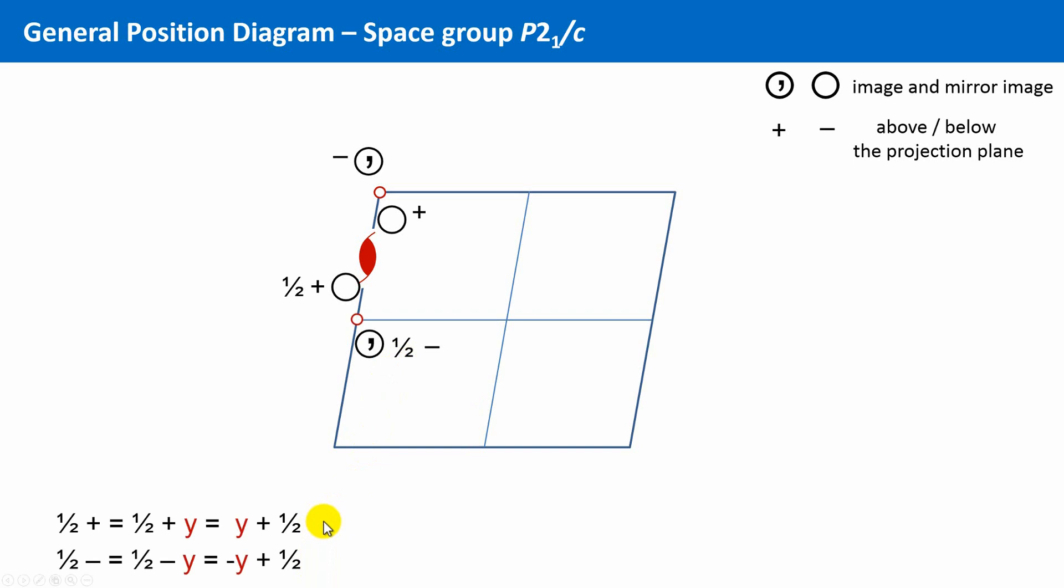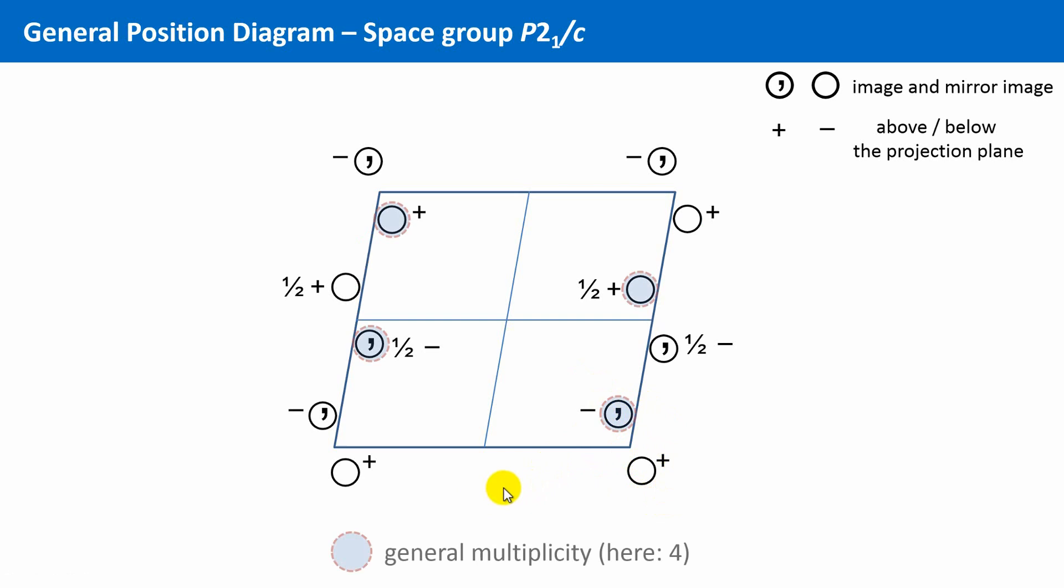Now, we can complete the general position diagram by applying the remaining symmetry elements. For instance, this center of inversion. This leads to these copies, and that copies over here, and so on, until we reach this complete picture. So, what is the multiplicity of a general position in the space group P21 over C? Well, this is simply to infer. We just have to count the circles inside one complete unit cell. One, two, three, four. Easy.